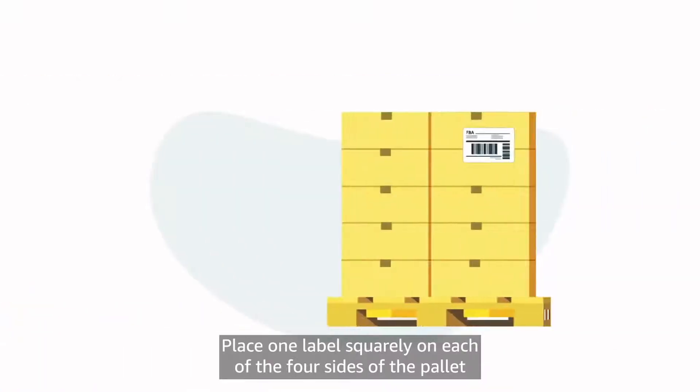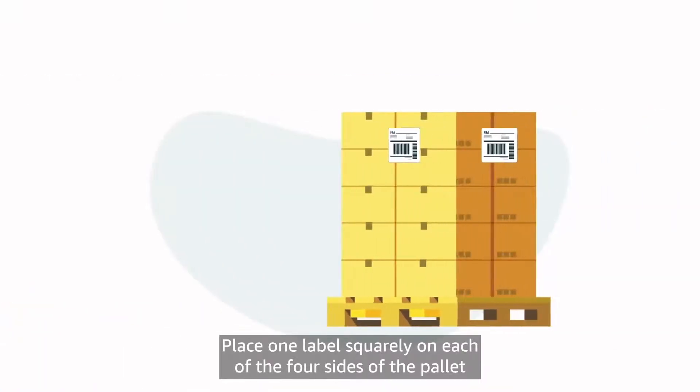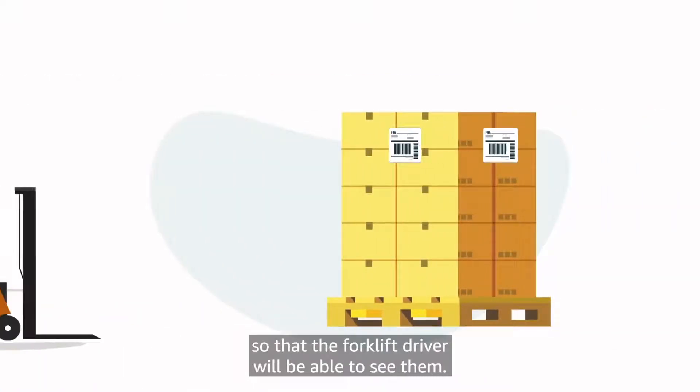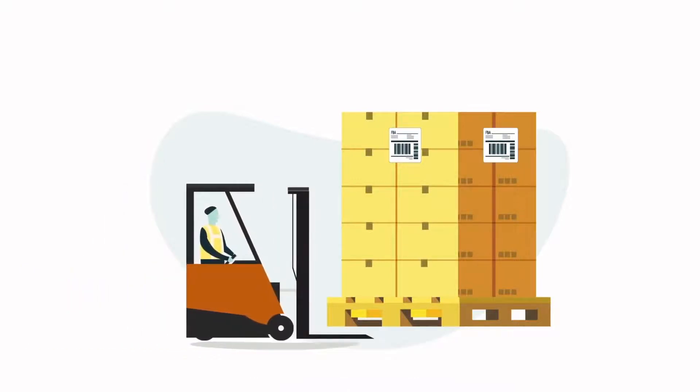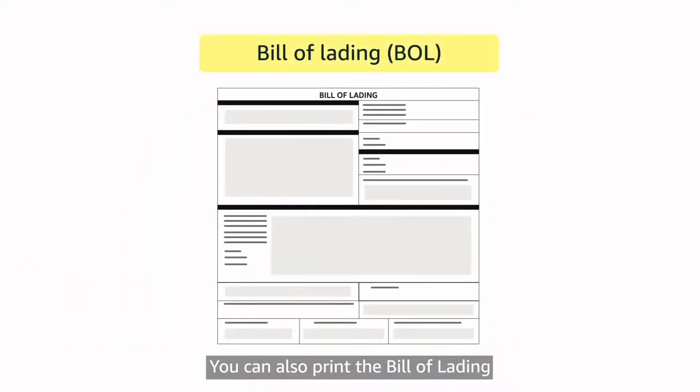Place one label squarely on each of the four sides of the pallet so that the forklift driver will be able to see them. You can also print the Bill of Lading (BOL) in this step.